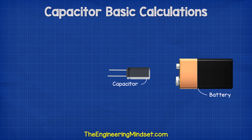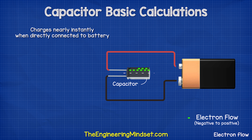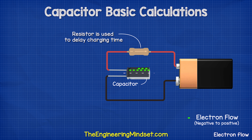When connecting to a DC supply, the voltage of the battery will push electrons into the capacitor and so the capacitor charges up to the same voltage as the battery. Capacitors are charged nearly instantly when connected directly to a battery, but we nearly always use a resistor. This will delay the charging time and later on in this video we'll see how to calculate that.